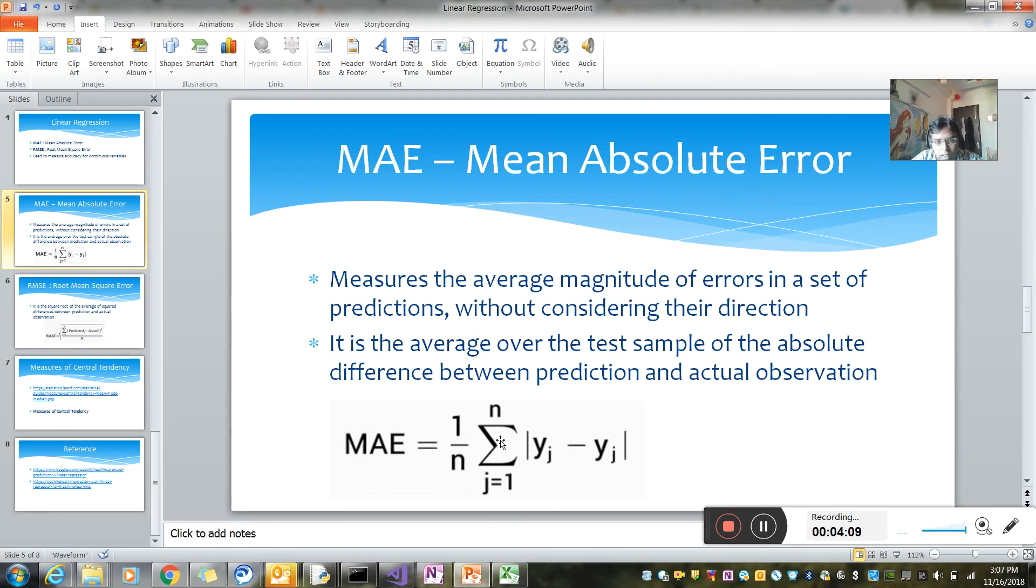Now, if you look at the formula, it says take the summation from first to the nth record of the predicted value minus the actual value, and divide by the number of samples.